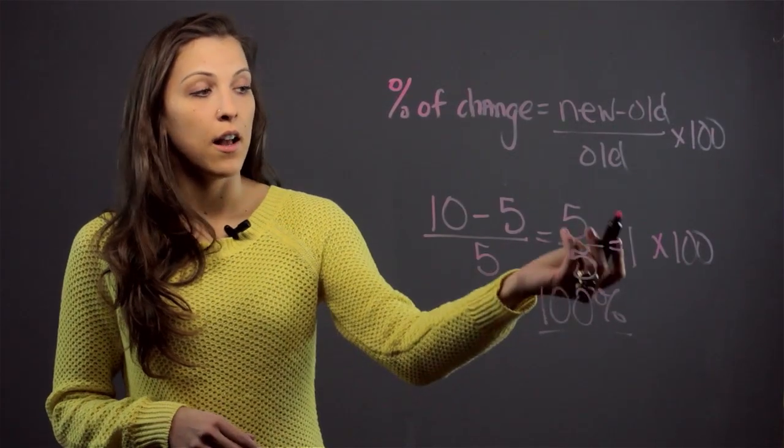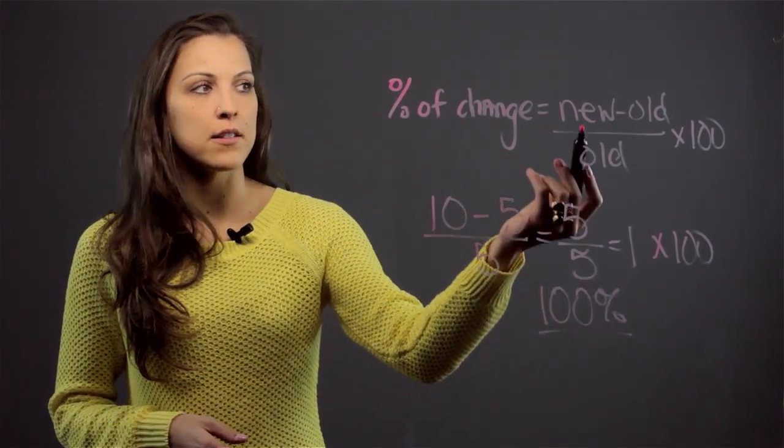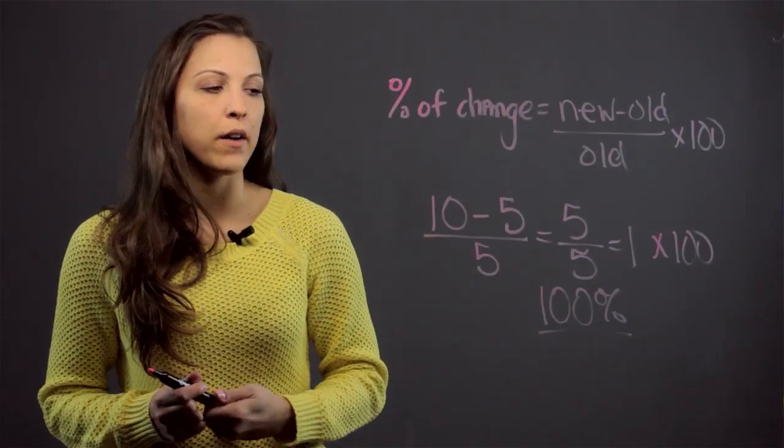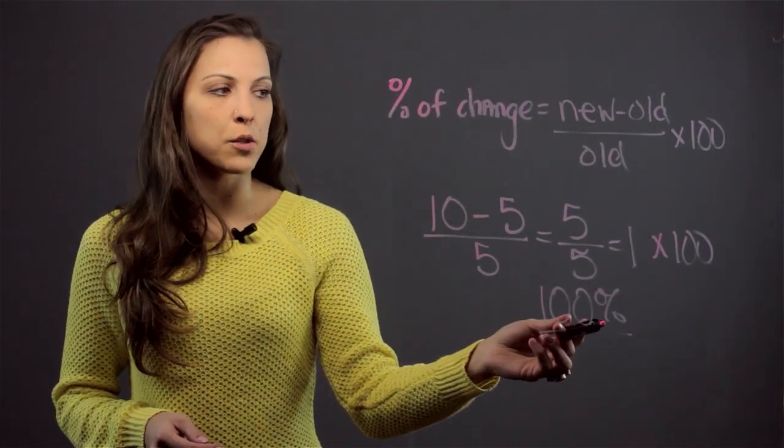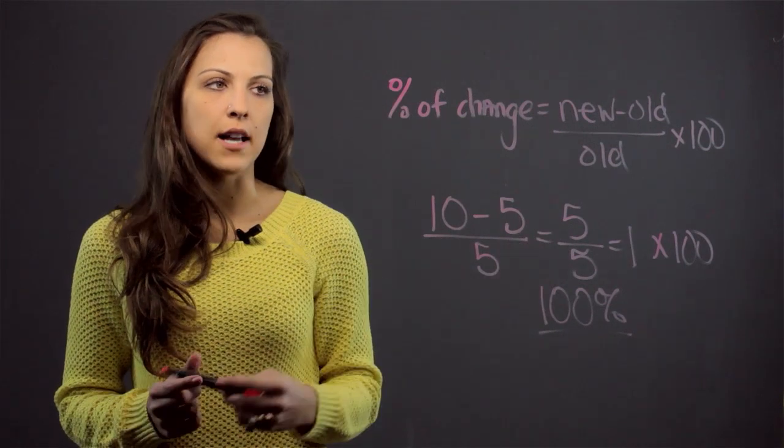And we know it was an increase because the number that we got was positive, and also because the new value was larger than the old value, so obviously it increased. So there was a 100% increase from 5 to 10.